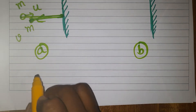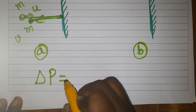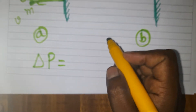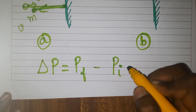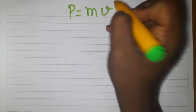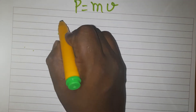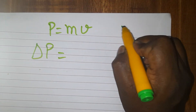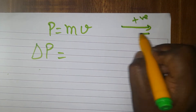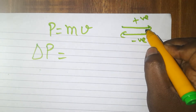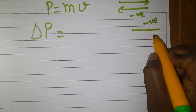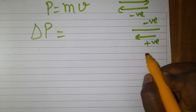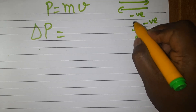Now what is the change in momentum? Change in momentum is equal to momentum final minus momentum initial. Momentum is equal to mass into velocity. According to NCERT, I am taking going as negative and coming back as positive. That means final velocity is going to be positive and initial velocity is going to be negative.